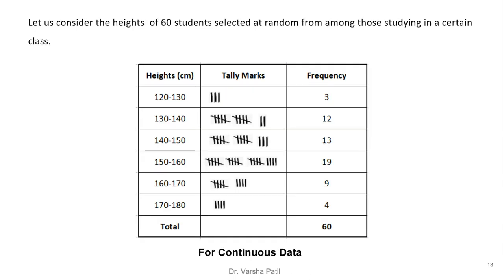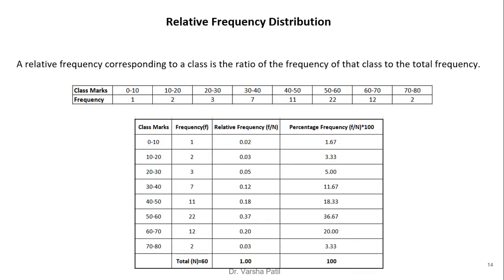The next example is for continuous data, where the quantitative variable is height. The height ranges from 120 to 180, with an interval of 10 (120–130, 130–140, ..., 170–180). The frequencies are counted from the data using tally marks. This is the example for continuous data, showing how to make a frequency distribution table for both continuous and discrete data.